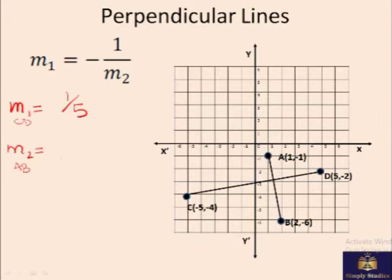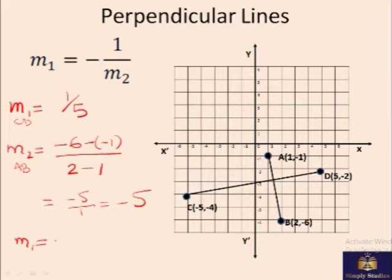Here, Y2 minus Y1 over X2 minus X1 gives you minus 5 over 1, that is minus 5. Now if you look at this, M1 and M2 are in this relationship. The signs are changed and it is flipped. This shows that these two lines are perpendicular. If this is the case, then the lines are perpendicular. Or if it is already given to us that the lines are perpendicular, then we know the slopes have this relationship.